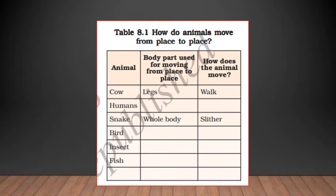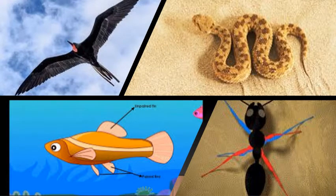Now let us see how animals move from place to place. You will fill up Table 8.1 on page 66 with me. How do animals move? Two examples have been done for you: cows use their legs to walk, humans use their legs to walk, snakes use their whole body and slither, and birds use their wings — W-I-N-G-S — to fly — F-L-Y.